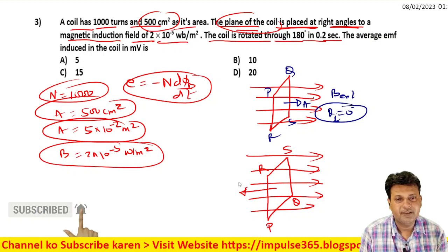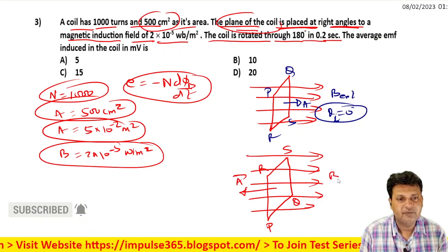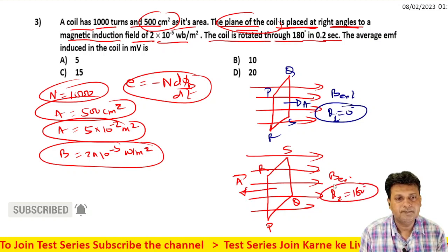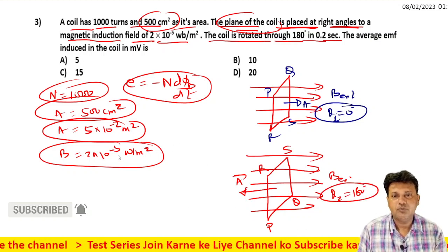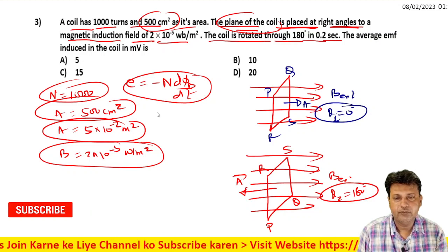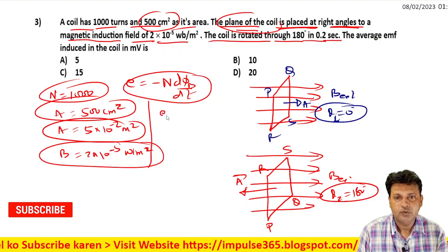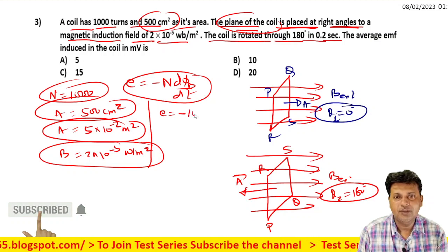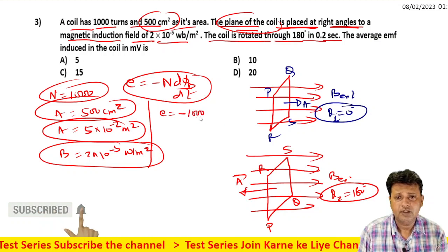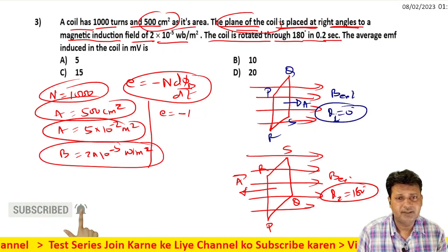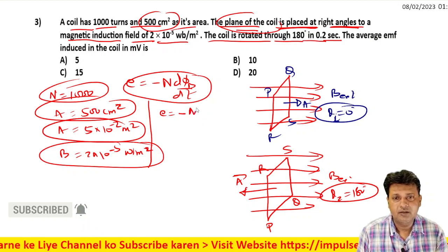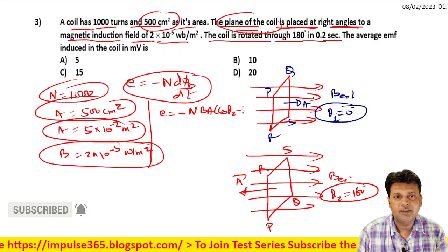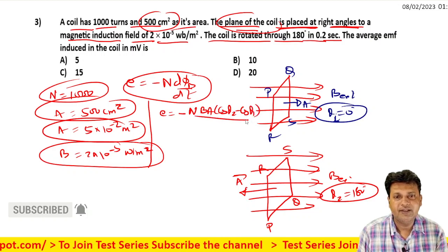So the area vector and magnetic field theta value is 180 degrees. How to solve? EMF is equal to minus n value 1000, minus n...